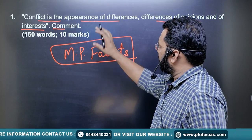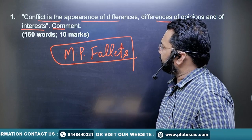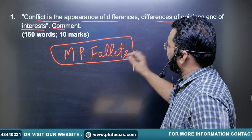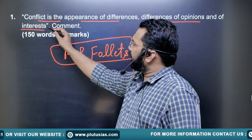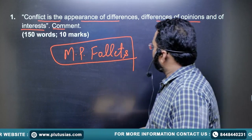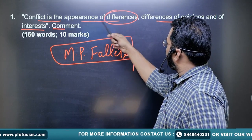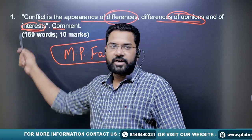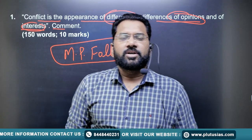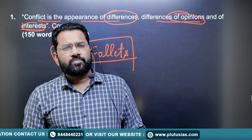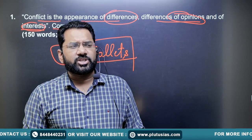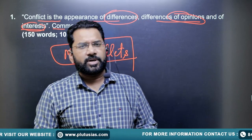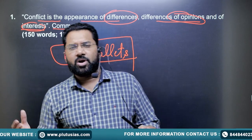Let's read the statement once again: 'Conflict is the appearance of differences — difference of opinion and of interest.' It is because of all these factors that conflicts are arising. As I mentioned, any conflict that is arising is because of some differences of opinion and interest.